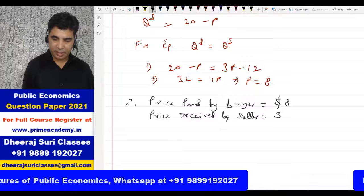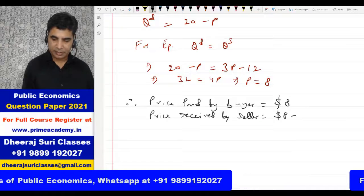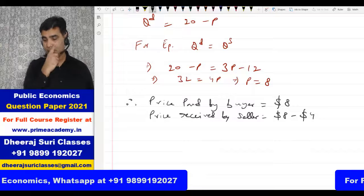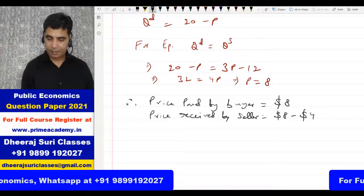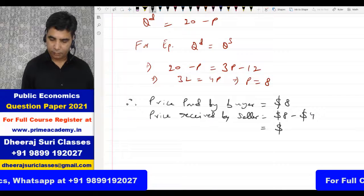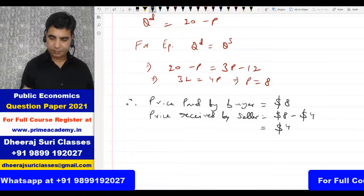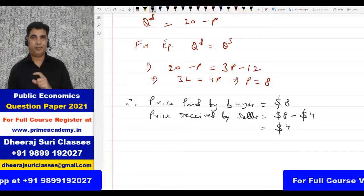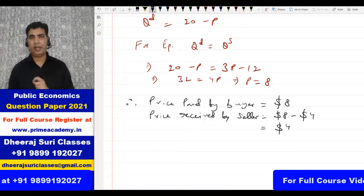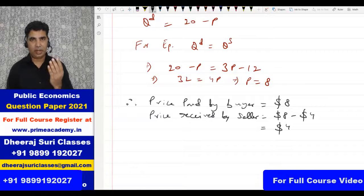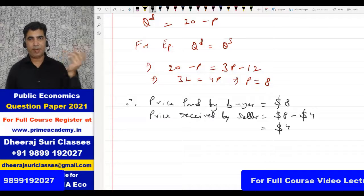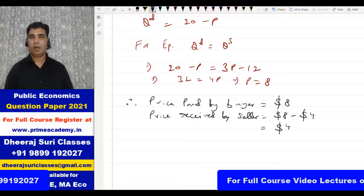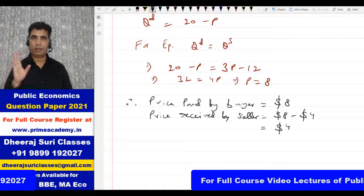The price received by the seller: since the seller has to give $4 to the government as tax, the net price received by the seller is $8 minus $4 = $4. So the government imposed $4 tax, of which $3 has been passed on to the buyer and $1 has been borne by the seller.